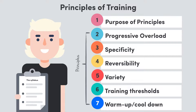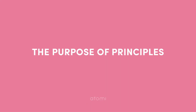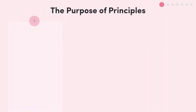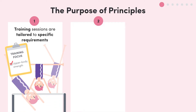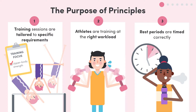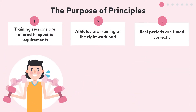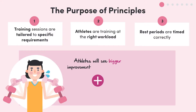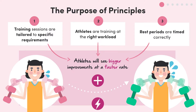Training for a sport is all well and good, but if the programs aren't tailored to meet the specific demands of the athletes and their sport, then you can bet your bottom dollar that athletes are not getting the most out of their sessions. The principles help by making sure training sessions are tailored to specific requirements, with athletes training at the right workload and rest periods timed correctly. If athletes use all of these principles, they will see bigger improvements at a faster rate than if they were to simply start exercising with no direction.